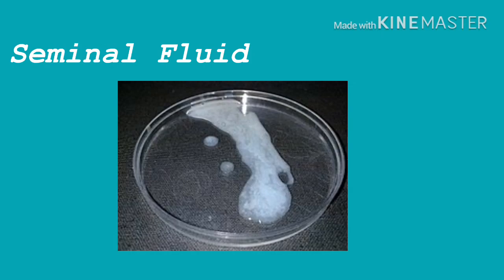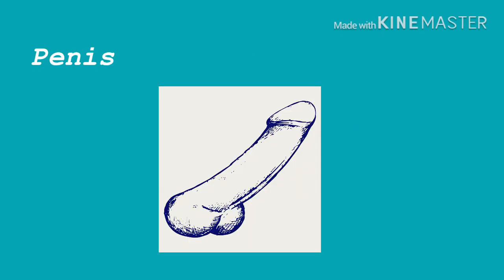The penis, the male copulatory organ, is a cylindrical pendant organ located anterior to the scrotum. It functions to transfer sperm to the vagina. The penis consists of three columns of erectile tissue wrapped in connective tissue and covered with skin. The two dorsal columns are the corpora cavernosa. The single midline ventral column surrounds the urethra and is called the corpus spongiosum.